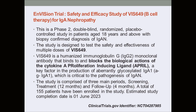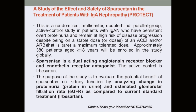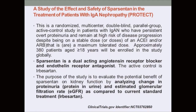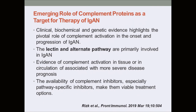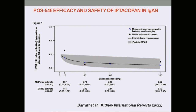Targeting the cytokine APRIL is the ENVISION trial, which is also currently ongoing. Sparsentan, a combined anti-angiotensin and anti-endothelin receptor antagonist, is showing promising interim results. Iptacopan, a highly selective oral factor B inhibitor in the alternative complement pathway, showed promising results in phase 2 trials and is now in phase 3.